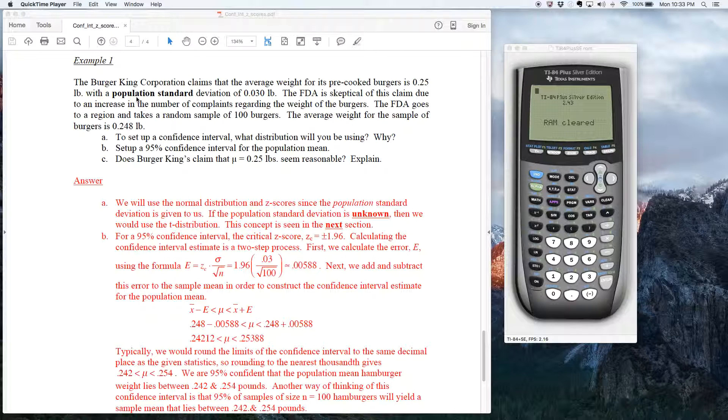So if you're given the population standard deviation, the rule is you're going to use the normal distribution and z-scores, plain and simple. If you're given the sample standard deviation, then you'll use the t-distribution. And that's explained in the next topic. The answer that I put down here, pretty simple. You're going to use the normal distribution and z-scores since you know the population standard deviation. It's a plain, simple answer.